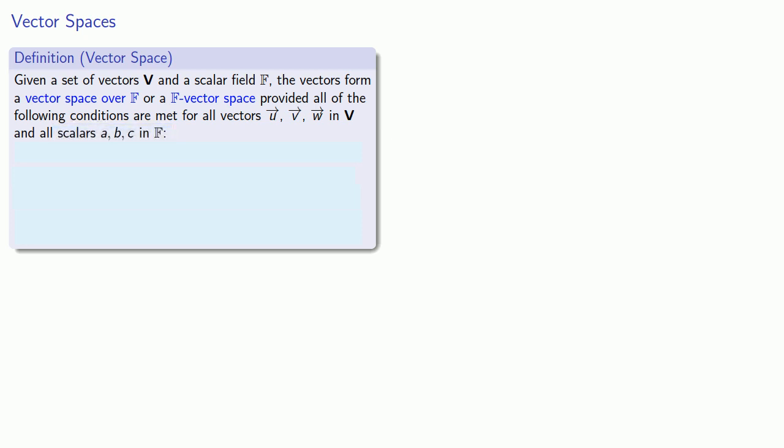First we have to have closure under vector addition. When I take two vectors v and u, their sum is also going to be one of the vectors in our set. Next we have to have closure under scalar multiplication. If I take some scalar c from our field F, then the scalar multiple c times my vector has to also be an element of my set of vectors.